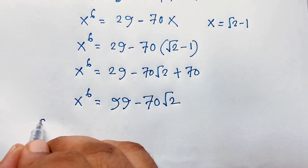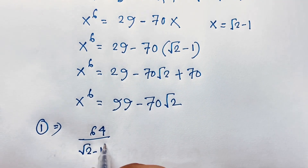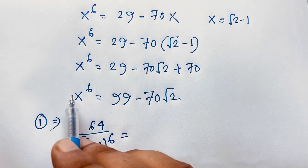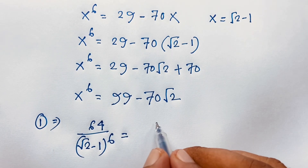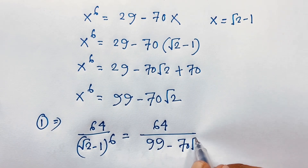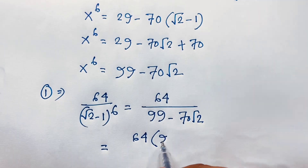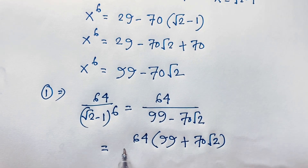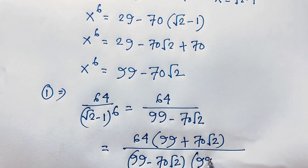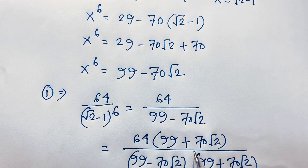Recalling our first equation: the expression is 64 over (√2 minus 1)^6. Substituting x^6 equals 99 minus 70√2, we get 64 over (99 minus 70√2). To rationalize, multiply numerator and denominator by (99 plus 70√2): 64 times (99 plus 70√2) over (99 minus 70√2)(99 plus 70√2).